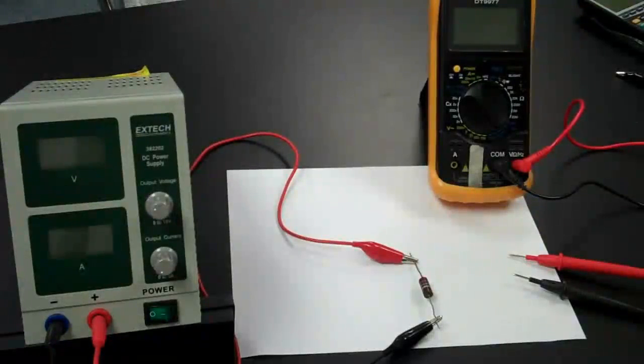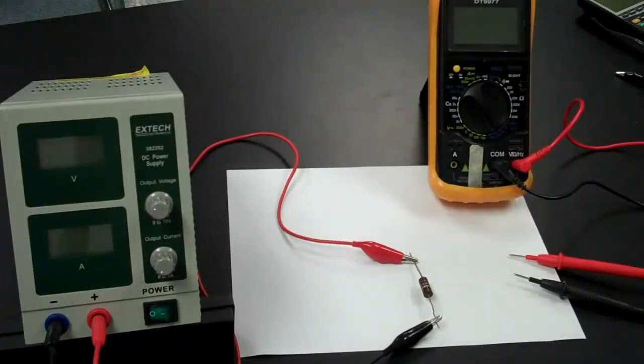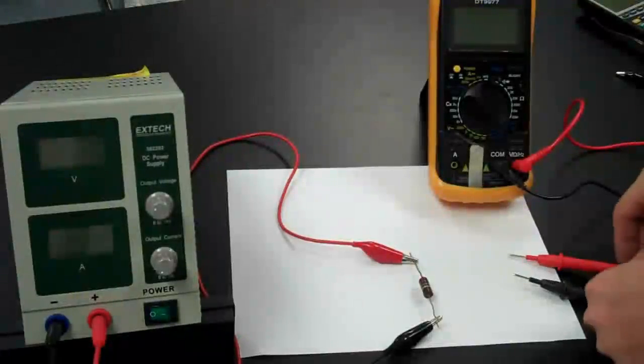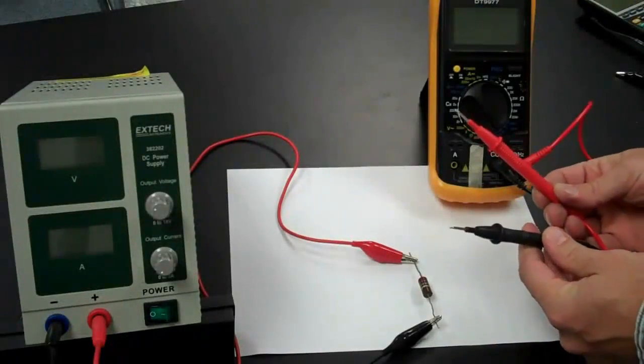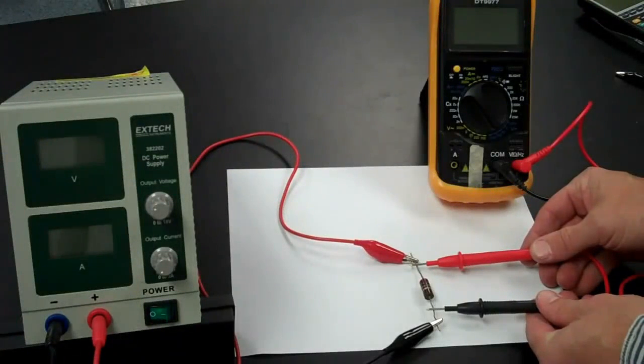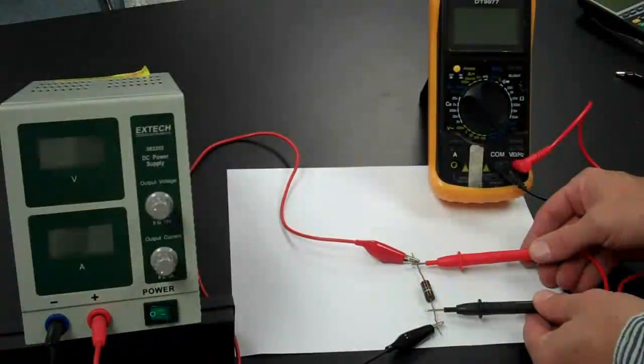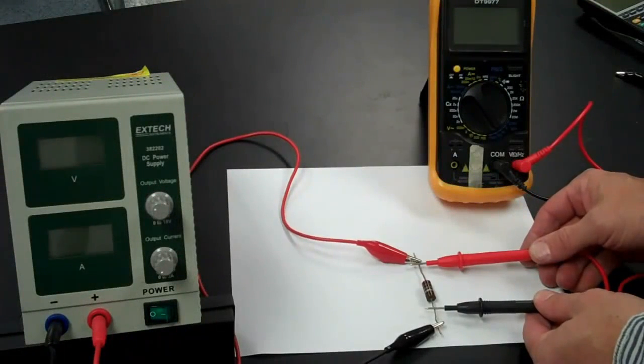Now, measuring voltage is much easier than measuring current. I place my voltmeter in parallel with the resistor. There's no need to disconnect any wires. All I need to do is take the probes of my voltmeter and touch them to either side of the resistor. Now my voltmeter is in parallel and my voltmeter will read out the voltage.